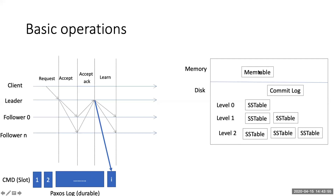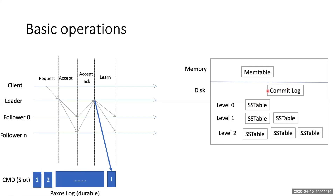Key and value changes go into the memtable and are flushed to SST tables. These levels are partitioned and flushed to lower levels. If the key is in the memtable, access is fastest. Otherwise the algorithm looks for the key in level 0, level 1, level 2, and so on.